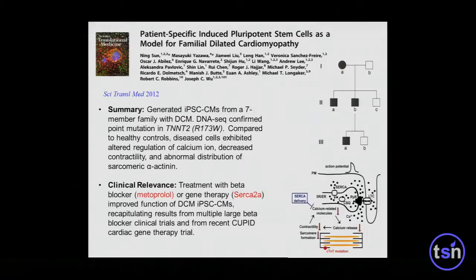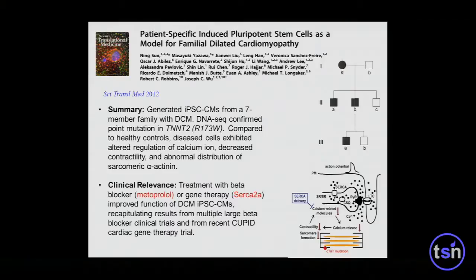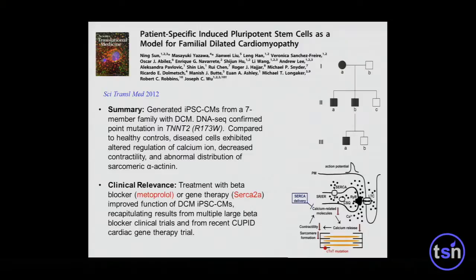The other example is dilated cardiomyopathy, one of the most common causes of heart transplants in young kids and adults. In this family, a child already had a heart transplant, his father also has cardiomyopathy, and his grandmother has cardiomyopathy — familial dilated cardiomyopathy. DNA sequencing revealed a troponin T mutation with an arginine to tryptophan switch. We made iPSCs, differentiated cardiomyocytes, and it took about three years to characterize why the cells weren't contracting and to develop drugs to block it, including beta blockers and SERCA2A. SERCA2A is already in the CUPID clinical trial using AAV virus to improve heart failure patients.